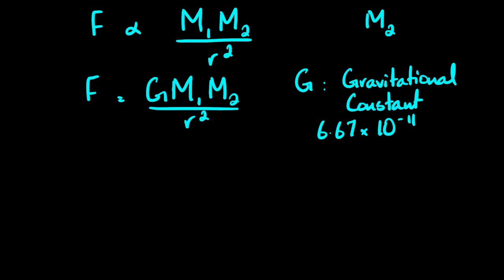We now have one complete relationship that can give us the gravitational force. All masses attract each other, but for small masses the force is so small it is not very noticeable, as you can see from that constant. Let's do an example and you'll soon see why I said these forces are too small to be noticed.